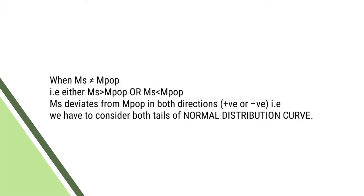When the sample mean is not equal to the population mean, either the sample mean is greater than the population mean or the sample mean is less than the population mean. It deviates in both directions — in the positive direction or in the negative direction. If the sample mean is greater than the population mean, it deviates in the positive direction. If the sample mean is less, it deviates in the negative direction. We have to consider both tails, that is both ends of the normal probability curve.